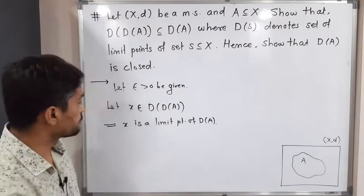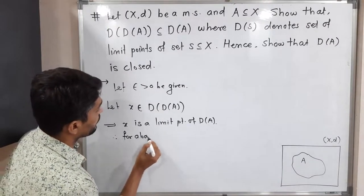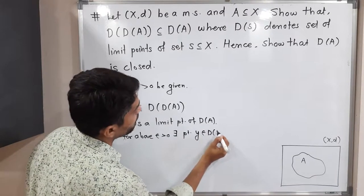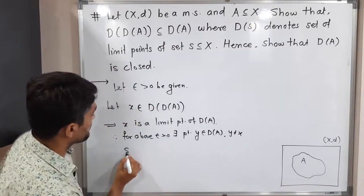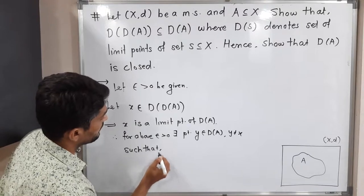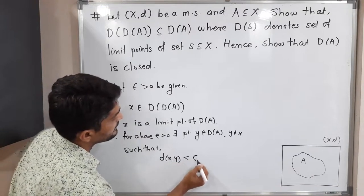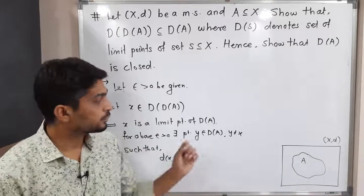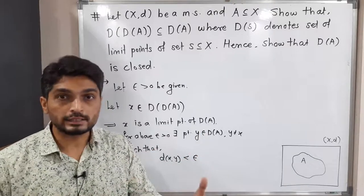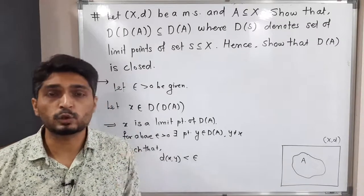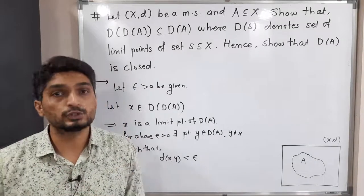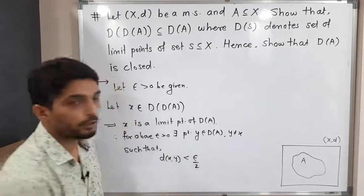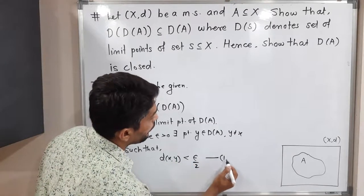Therefore, for the above epsilon greater than 0, there exists a point Y belonging to D(A) such that Y is not equal to X and d(X, Y) is less than epsilon. But for adjustment purposes, I am considering epsilon divided by 2 here. So d(X, Y) is less than epsilon by 2. I am calling this inequality number 1.